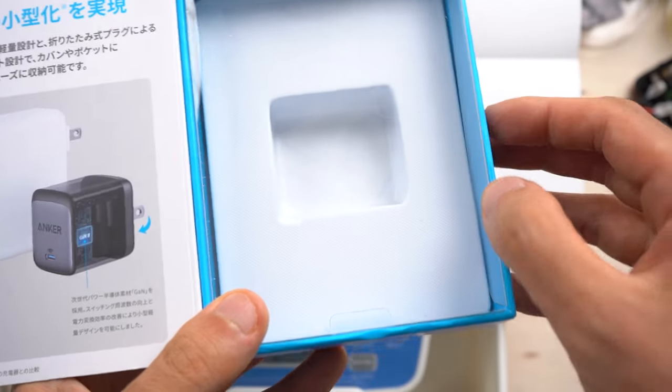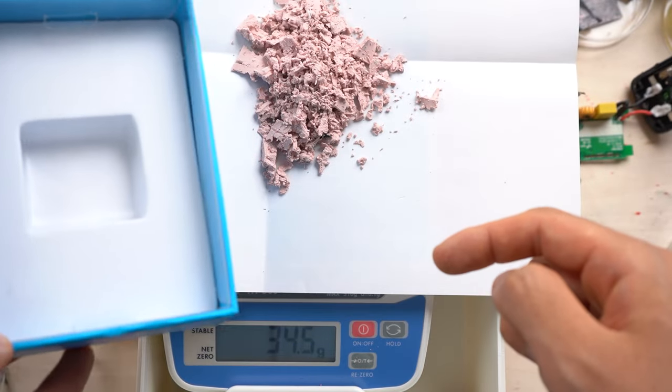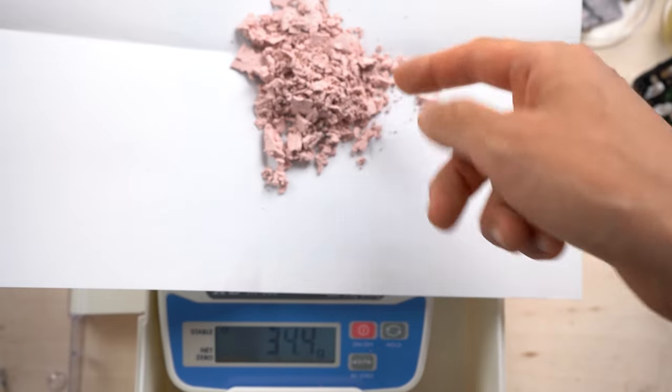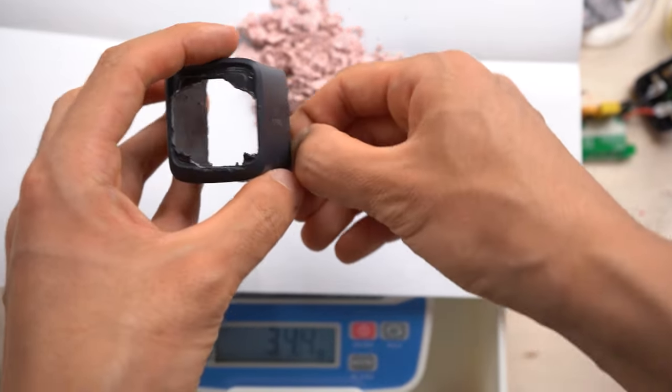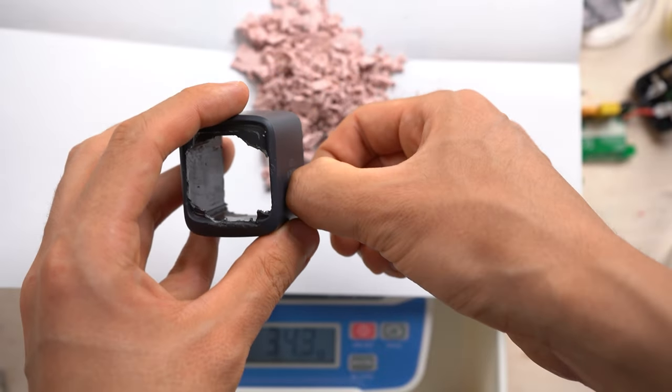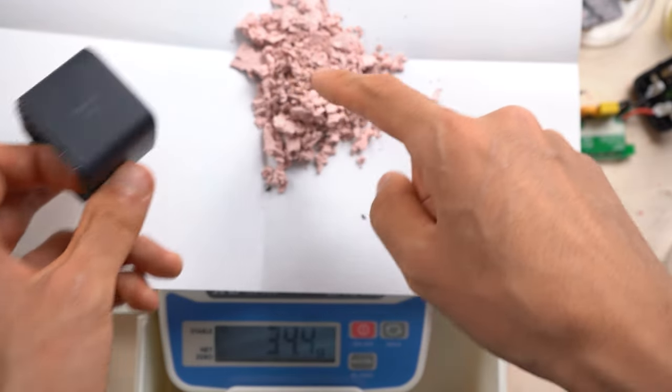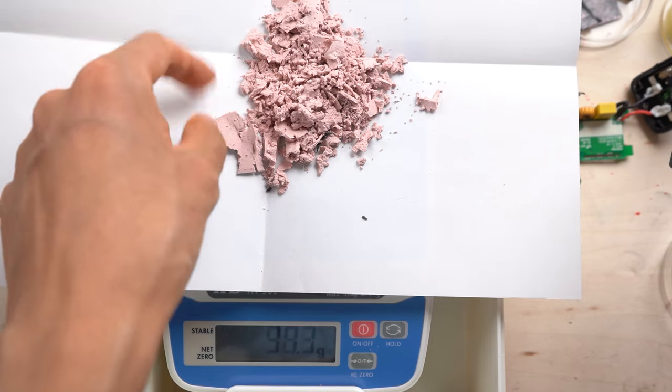Now I understand why the 65W version is a bit heavy. With 30 grams of silicone inside, of course it's heavy. Probably the silicone is used to improve heat dissipation. As you can see, the case is very small. As it's packed with a lot of components that generate heat, heat dissipation of this charger must be a challenge. The silicone is filled in the case to increase dissipation efficiency. This must be for heat dissipation.